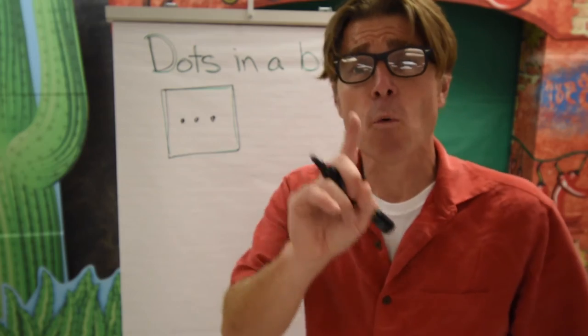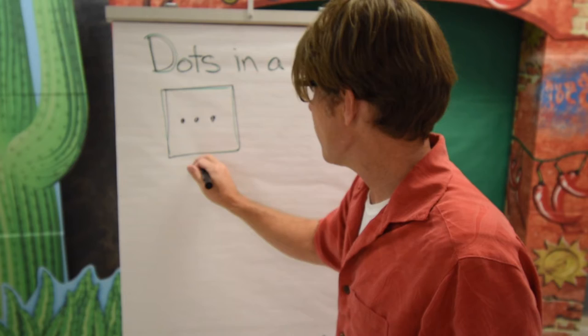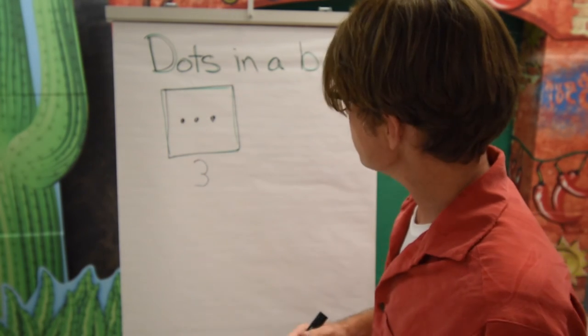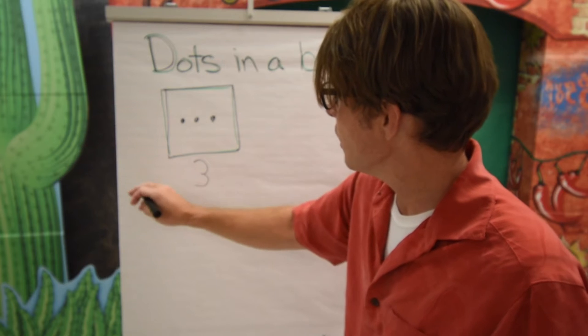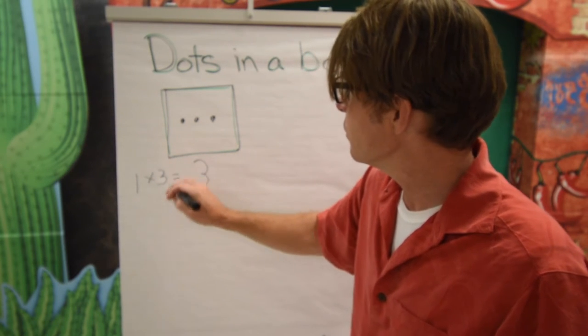Now from there we're going to want to know what one times three is. That's pretty simple because it's one, two, three. We'll just write our three right below the box. So one times three is three, and you can actually write one times three equals three on that side.